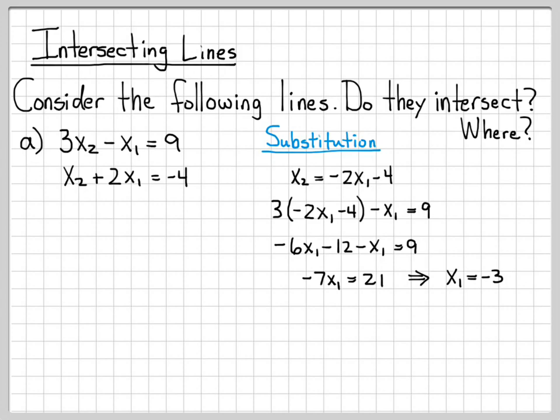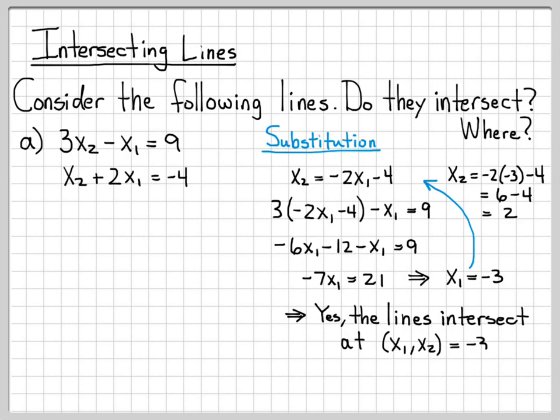So using substitution, I've solved for the value of x1. It is equal to negative 3. And then if I go back to the starting equation for x2, I can replace x1 with negative 3 and solve for x2. So if I do that, I get x2 is 6 minus 4 or 2. So using very simple, straightforward, basically high school algebra, we were able to determine that yes, these lines do intersect and they intersect at the point minus 3 comma 2. So that's one way to solve a system of equations like this and find out where these lines intersect.